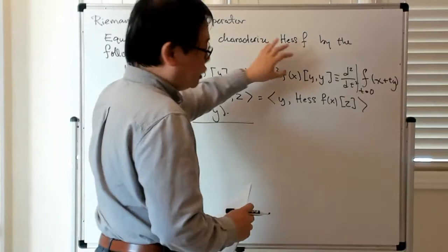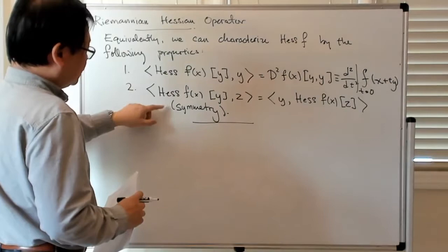All right, so last time we talked about properties of the Hessian on Rn, and in particular it has these two properties